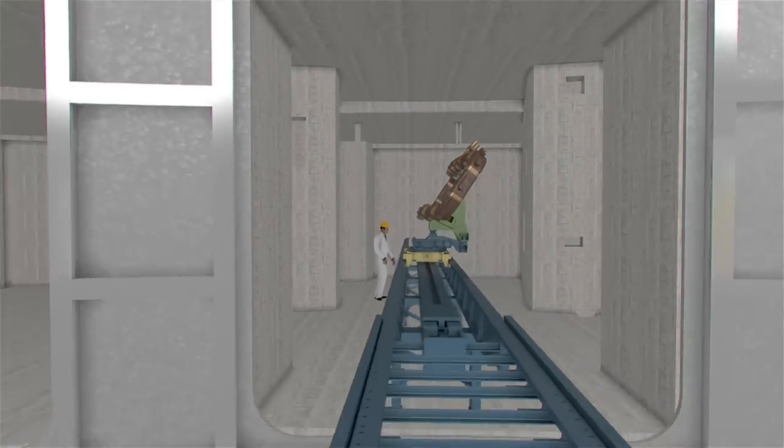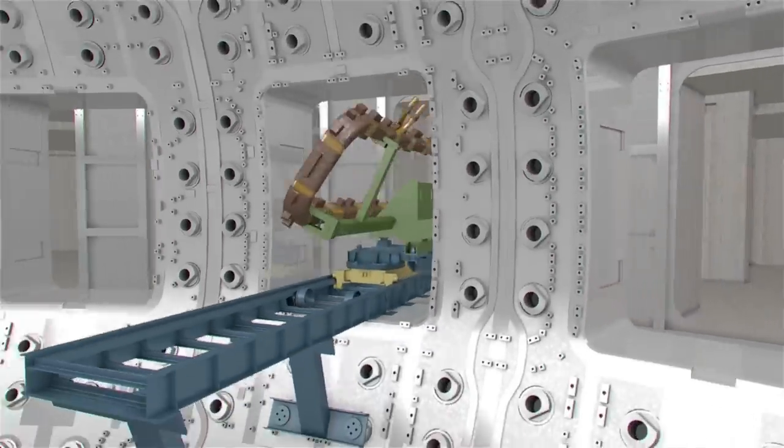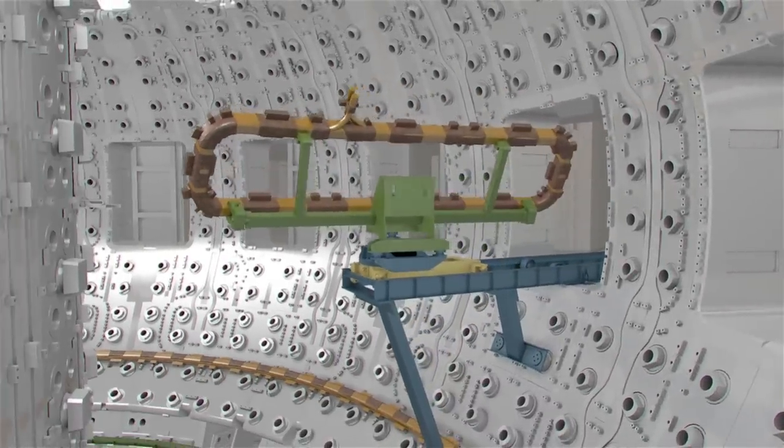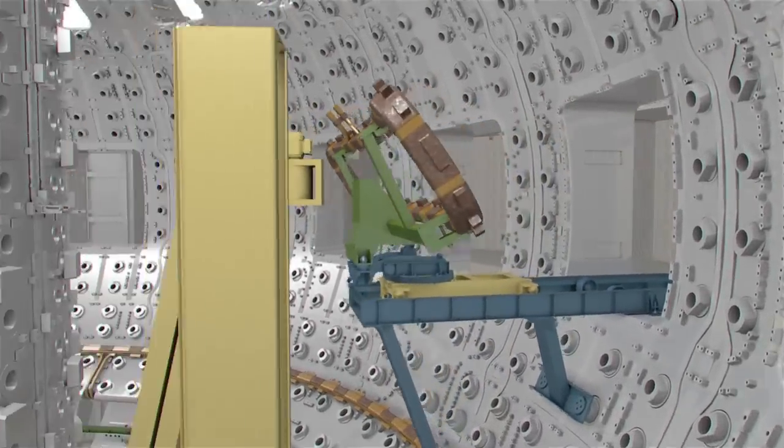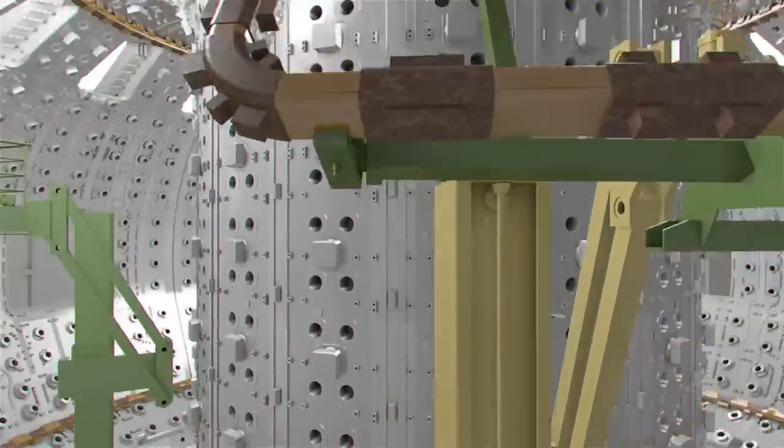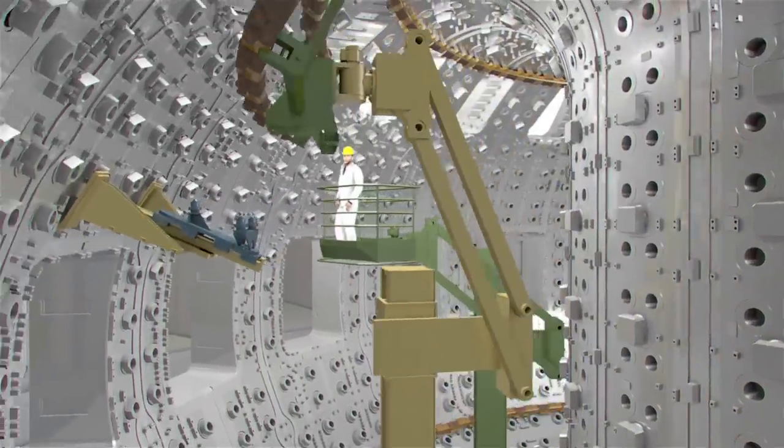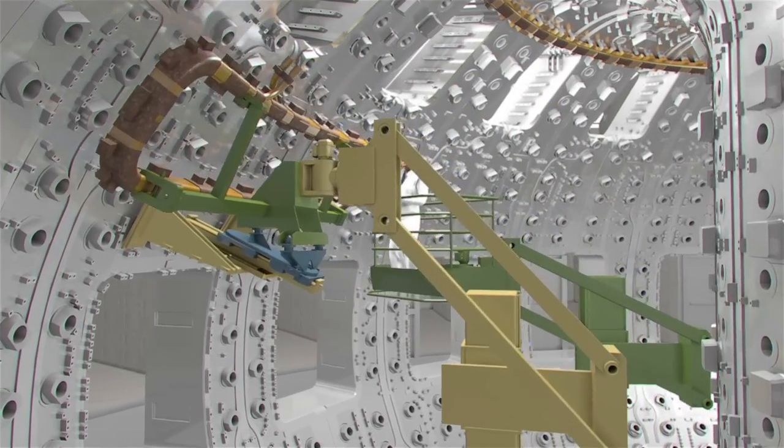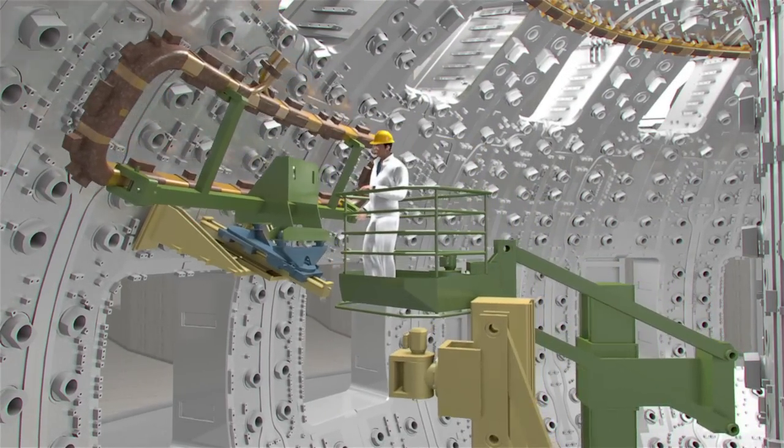The next components to be installed are the ELM coils and their feeders. They will help control plasma instabilities called edge-localized modes, hence ELMs. There are three such coils foreseen for each of the nine vessel sectors, the individual weight of each coil being 1,400 kg.